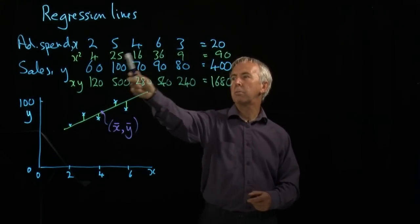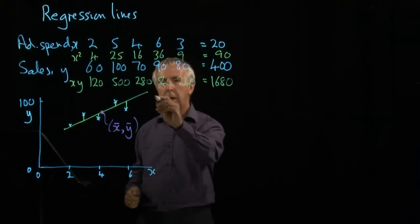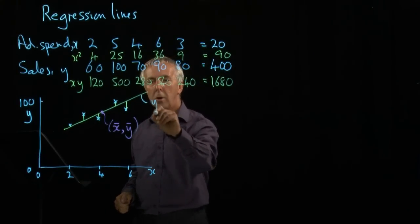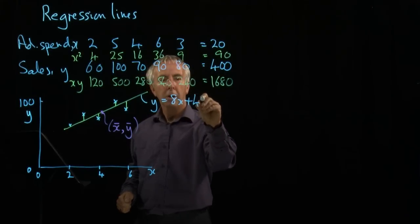2, 5, 4, 6, 3, 60, 100, 70, 90, 80, the equation of this line was y equals 8x plus 48.